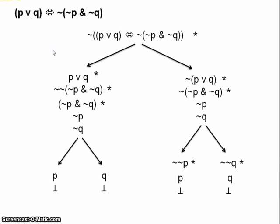Our whole tree is closed, so our original argument is valid. Again, it's an argument with no premises, so that's a logical truth.